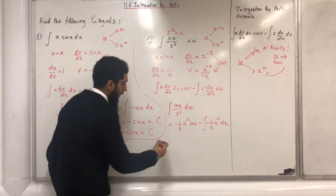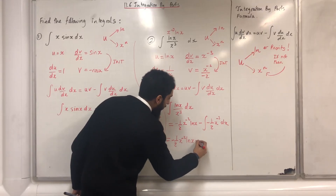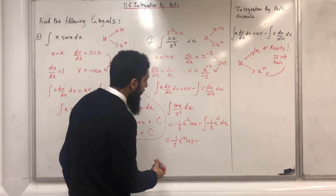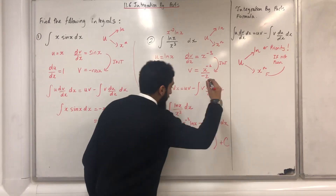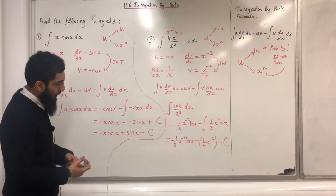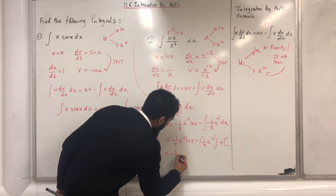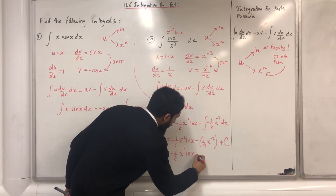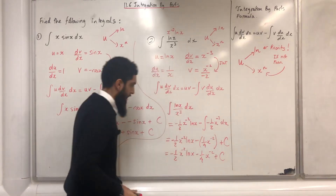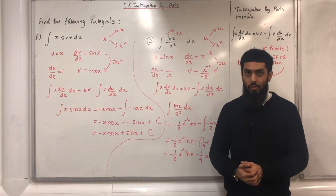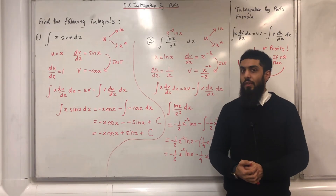Taking it a step further I get minus one half x to the power minus 2 ln x minus. Now I need to integrate: integrating gives one quarter x to the power minus 2, plus c, the constant of integration. So the final answer is minus one half x to the power minus 2 ln x minus one quarter x to the power minus 2 plus c. This was the first part of my video on integration by parts. In part 2 I will be covering more questions. If you found this video useful, please don't forget to subscribe.